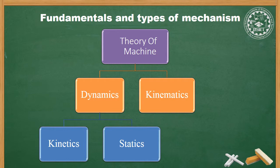The Theory of Machine is divided or classified into two parts: first is Dynamics and second is Kinematics. Kinematics deals with the study of relative motion between the various parts, but without consideration of forces. So the study of relative motion between the parts — without considering forces — is called Kinematics.